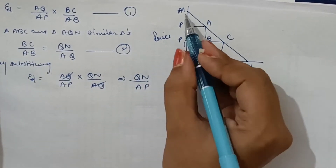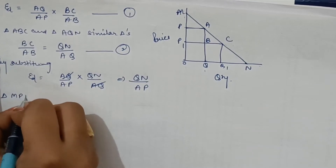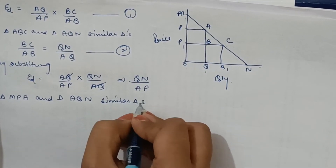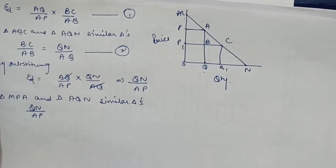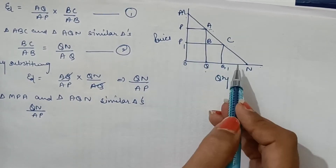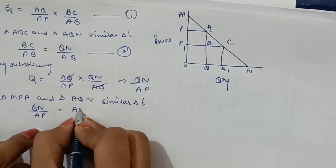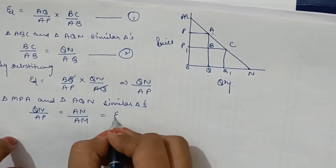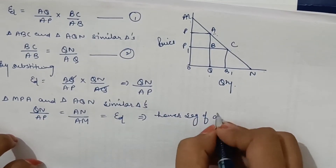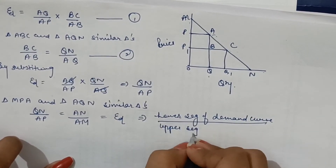Since triangles MPA and AQN are similar, their other set of sides would be in the same ratio. So QN/AP equals AN/AM, which was our requirement. Therefore, elasticity of demand equals the lower segment of the demand curve divided by the upper segment of the demand curve.